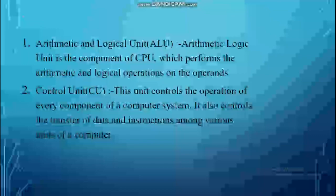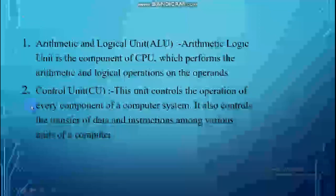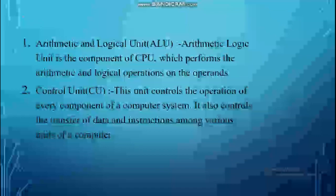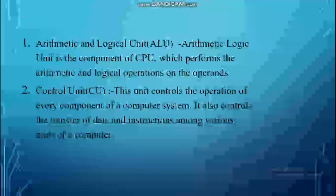The last component is the Control Unit. This unit controls the operations of every component of a computer system. It also controls the transfer of data and instructions among various units of the computer — overall management and monitoring is done through the Control Unit. A diagram, Figure 1.2 in your book, shows these three components: Control Unit, ALU, and Memory Unit.